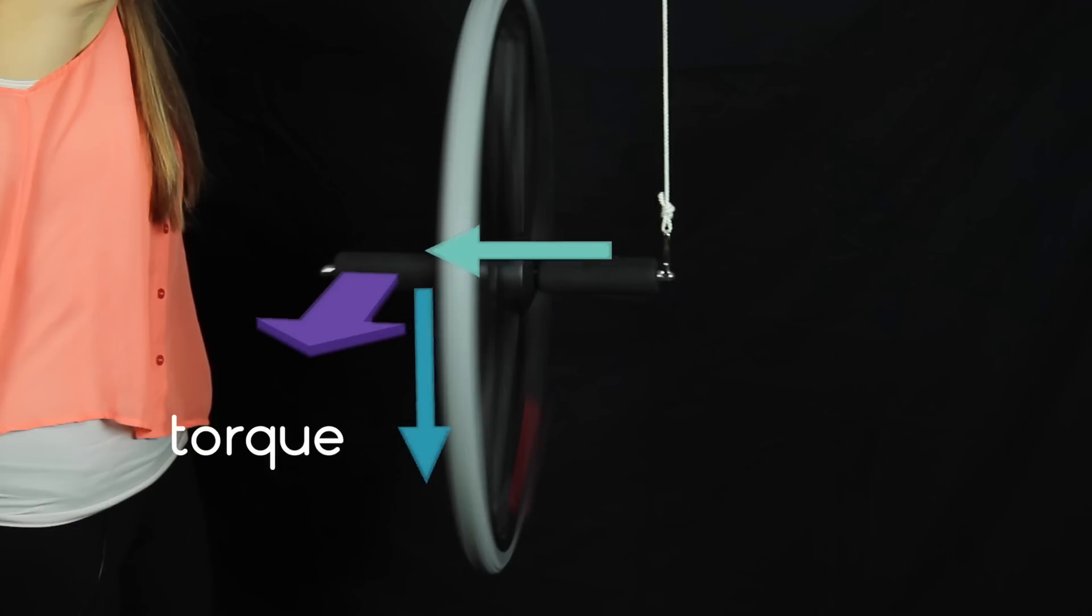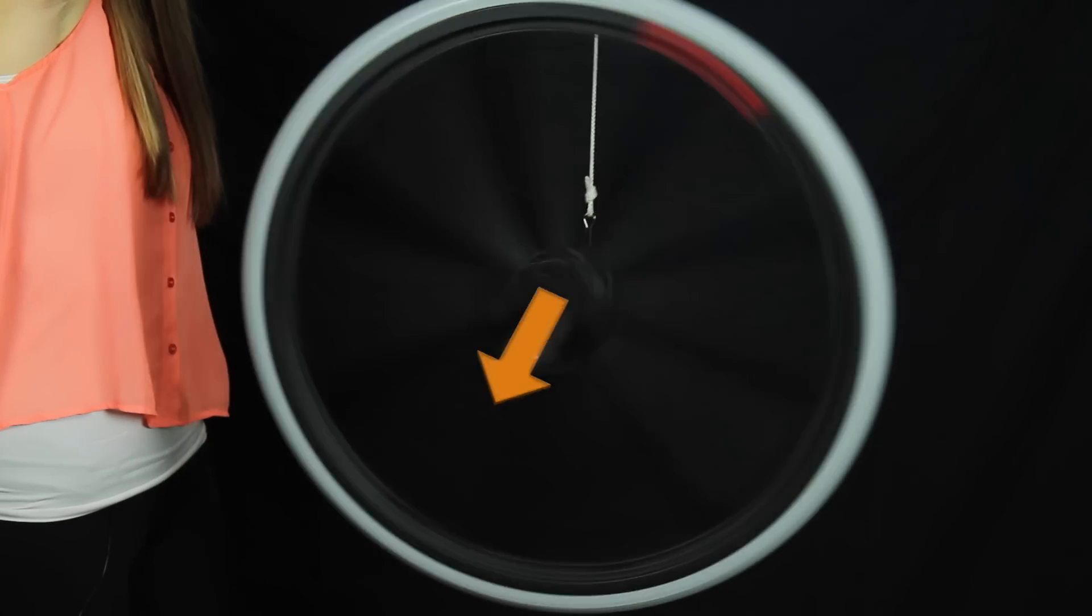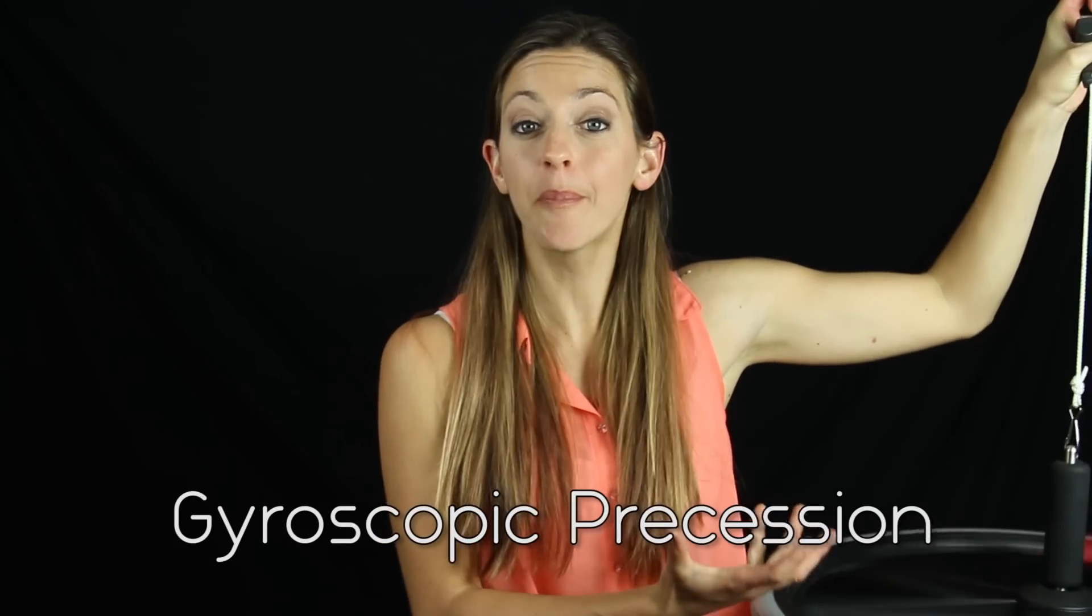So a torque on the wheel like this would increase momentum in that direction. A torque this way, like that due to gravity, would make the angular momentum vector want to rotate that way, and the gyroscope will turn. What we call gyroscopic precession.